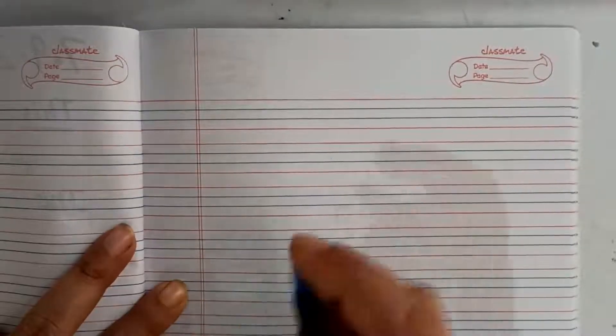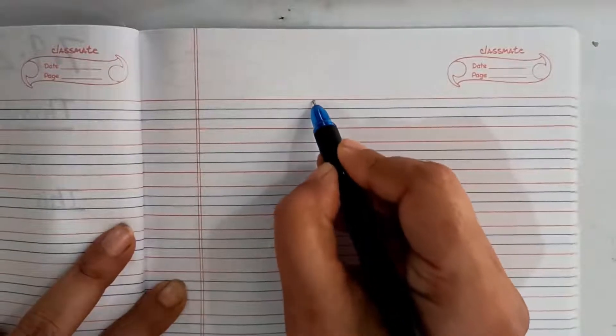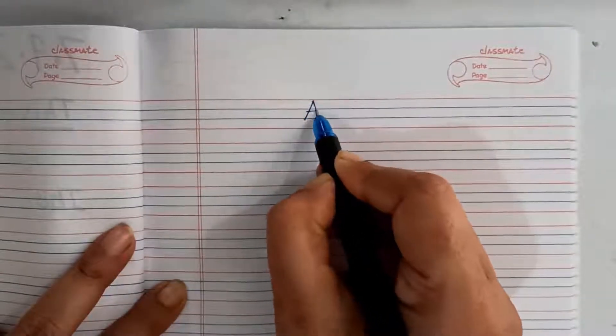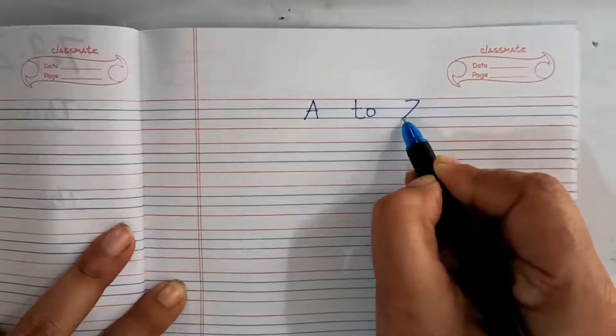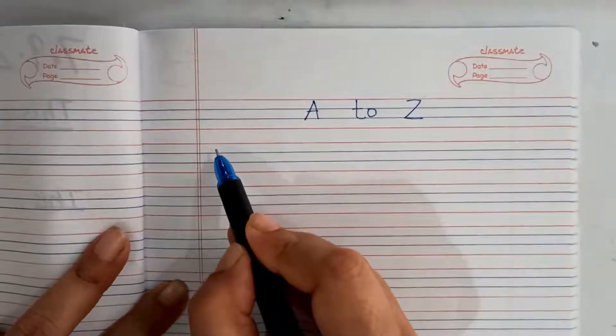Hello children, first we will learn capital A to Z. See A to Z. For that you have to remember the lines.